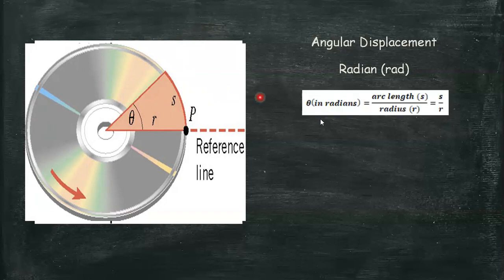So an angle is subtended by an arc of length s on a circle of radius r. The value of theta in radians is equal to s divided by r.